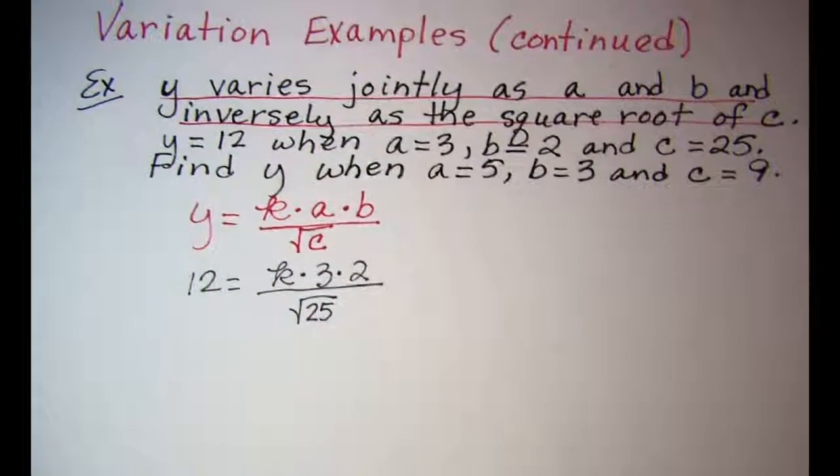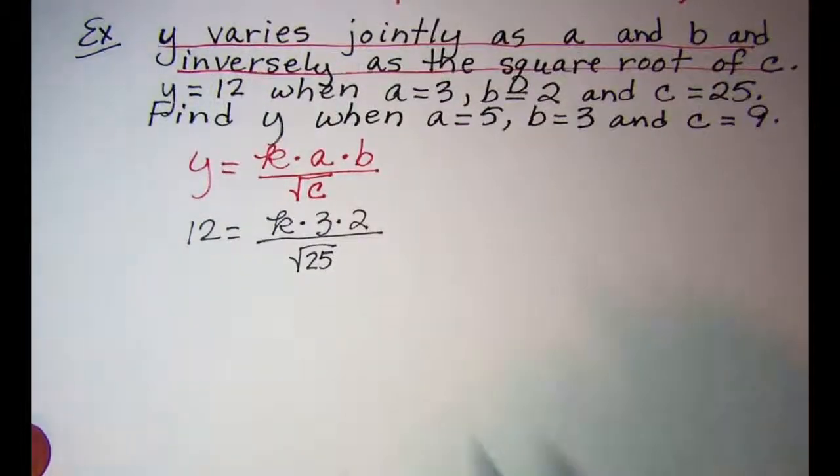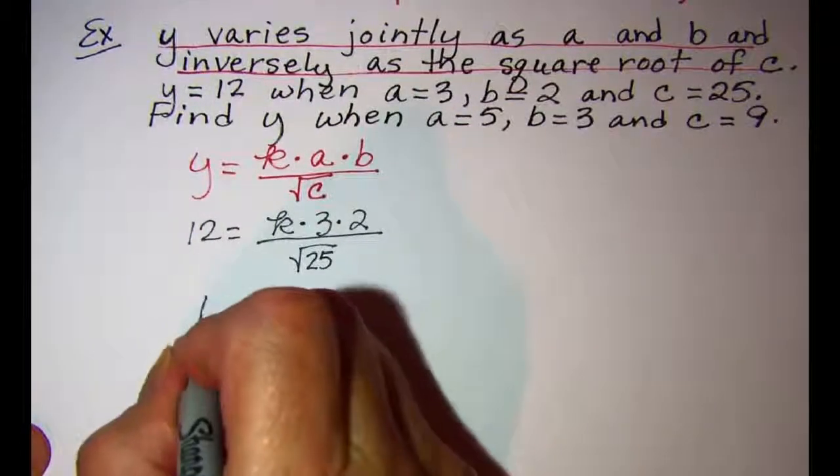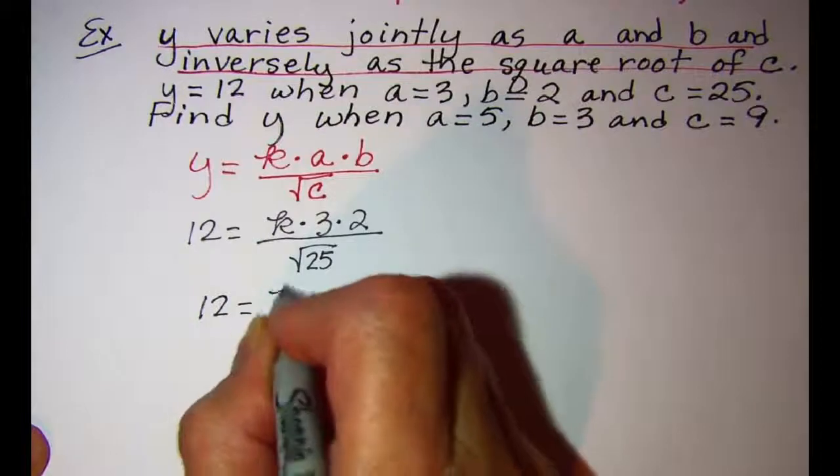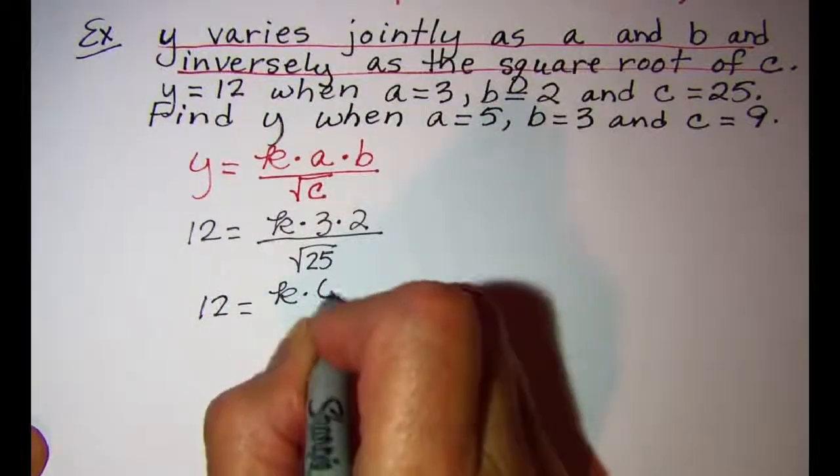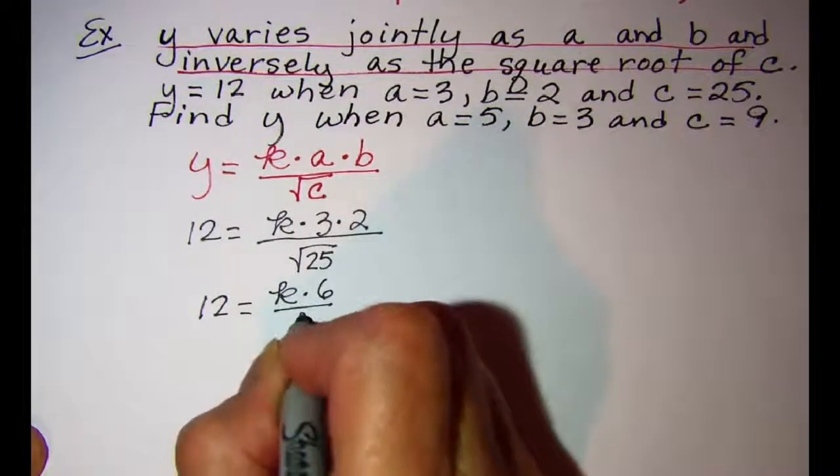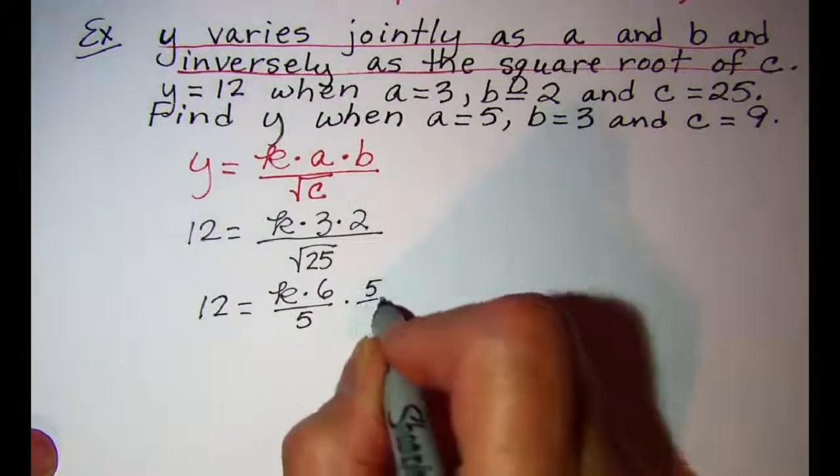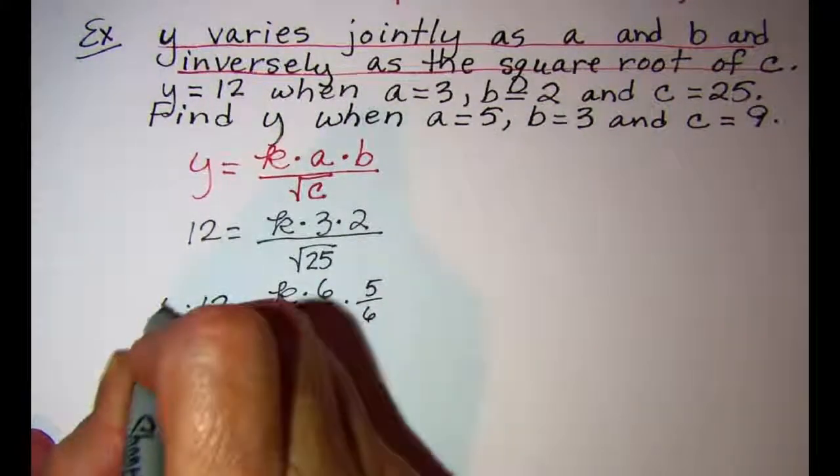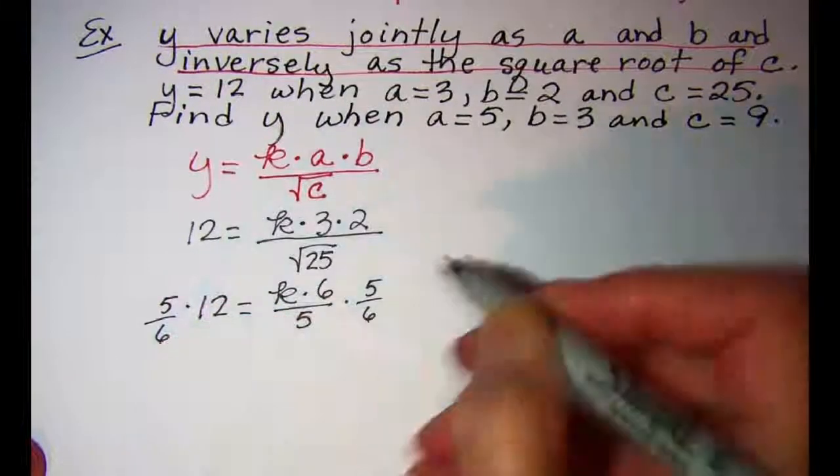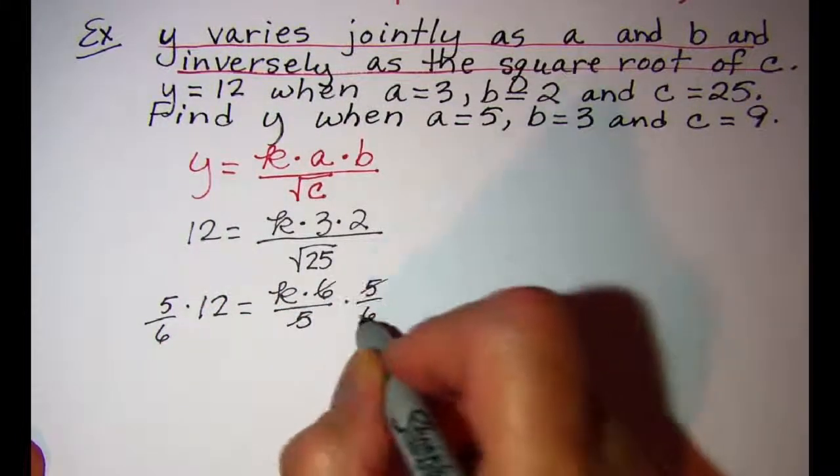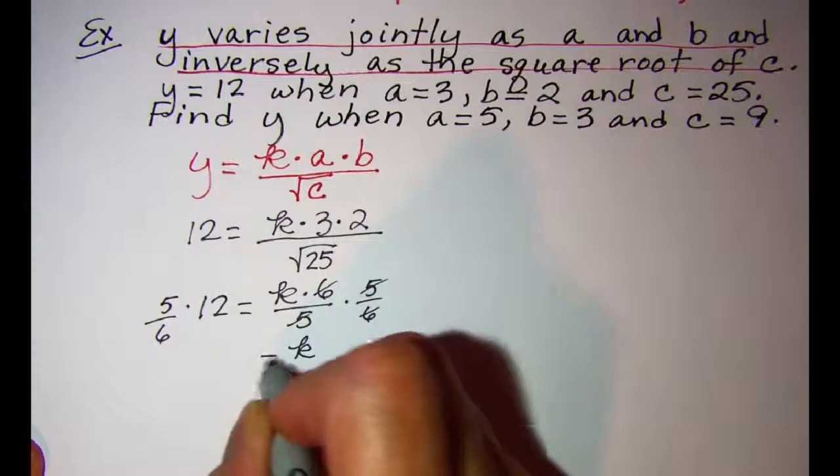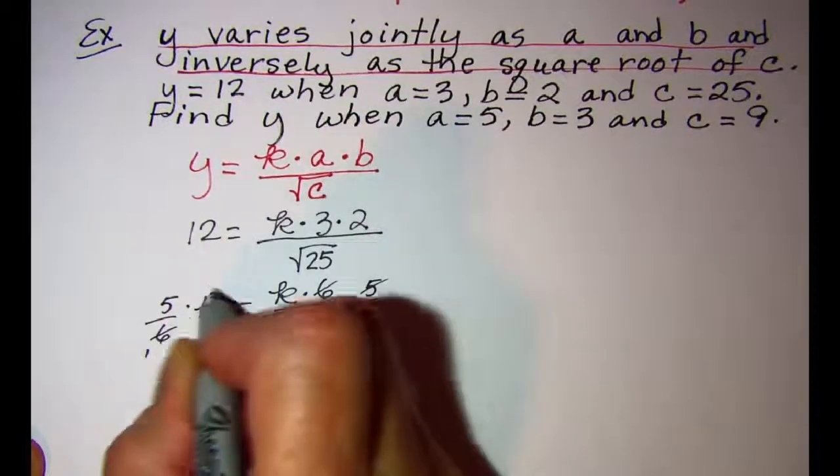Now I can solve for k. 12 equals k times 6 divided by 5. To get k by itself I'll multiply by the reciprocal. So k is 10.